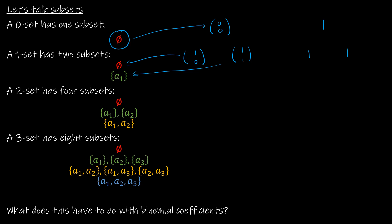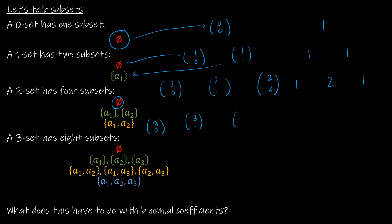If I look at my two set, I've got C(2,0), C(2,1), C(2,2). There's just one way to choose zero, two ways to choose one, and just one way to choose both. Then I can continue with C(3,0), C(3,1), C(3,2), C(3,3), and that gives me one way, three ways, three ways, and one way.